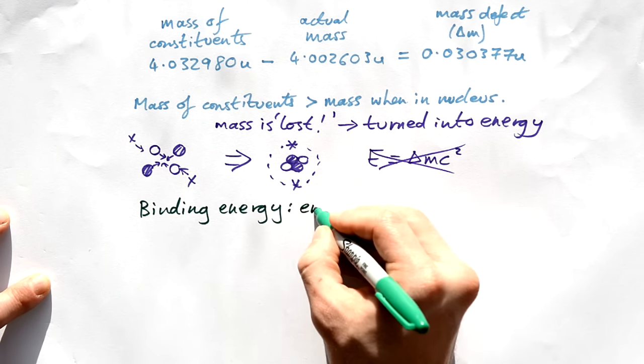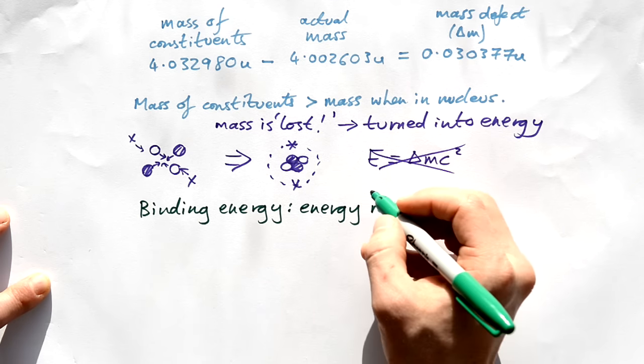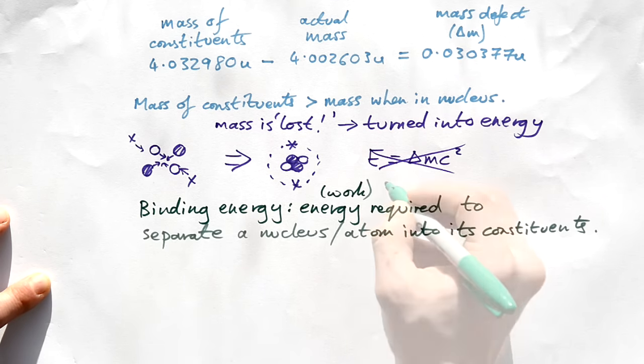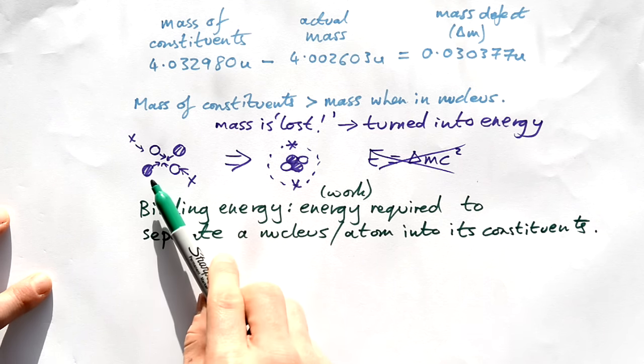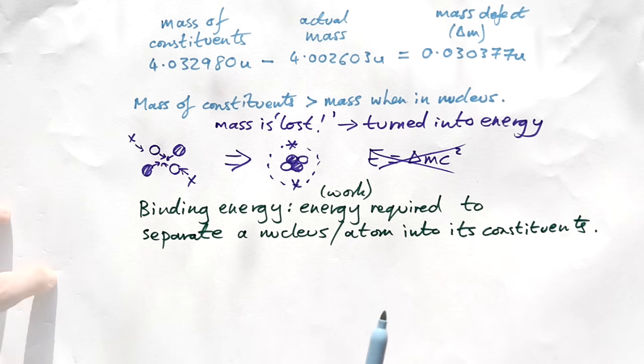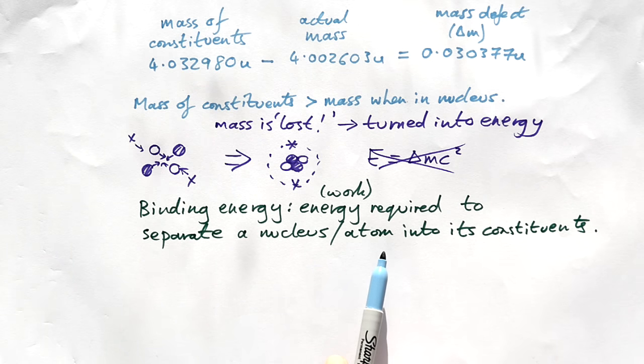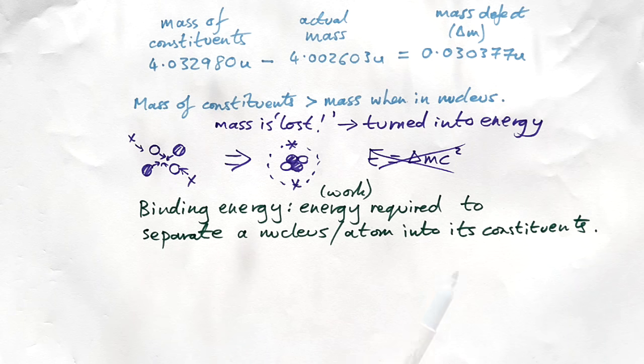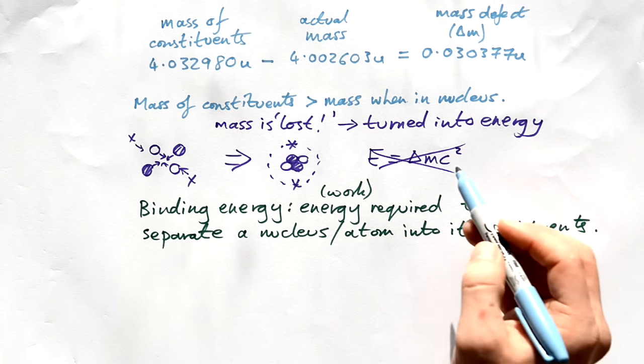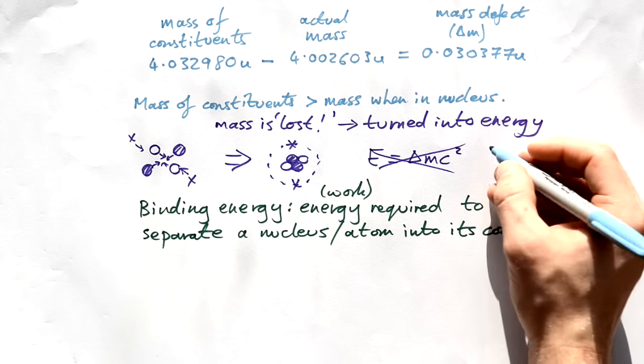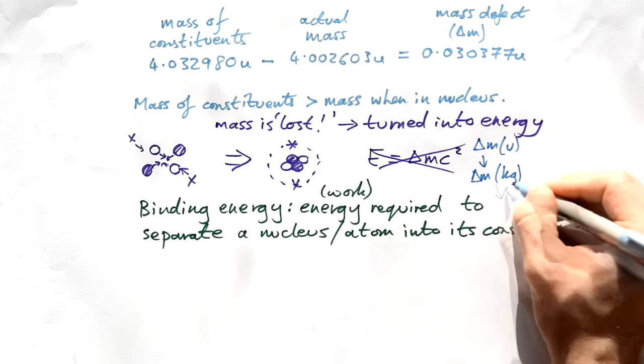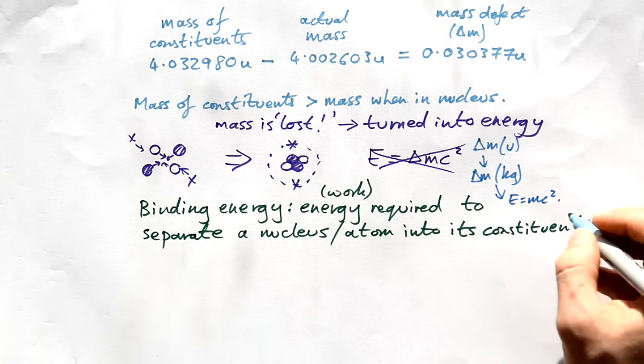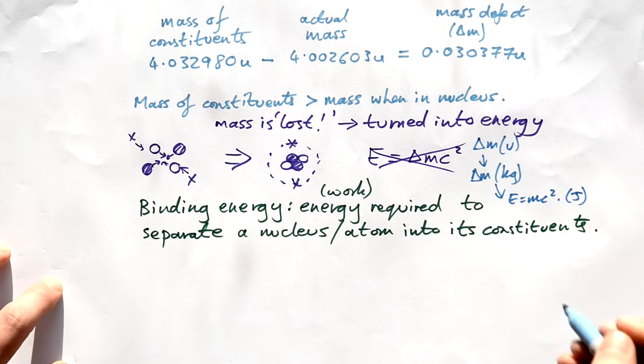And we call this energy the binding energy. And the definition is the energy, now we can say work as well, it's the energy or work required to separate a nucleus or an atom into its constituents. Yes, that's the same amount of energy that is released when we go the other way as well. And obviously the bigger the atom or the bigger the nucleus, the more binding energy it has, the higher the binding energy for it is going to be. So like we said, in order to use this, we need to take our mass defect in U, turn it into our mass defect in kilograms, and then E equals mc squared it. And then we end up with joules. But there is a shortcut.